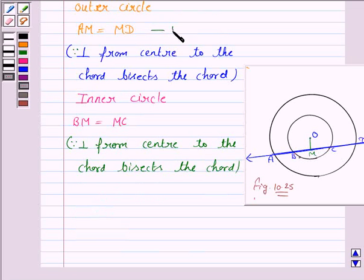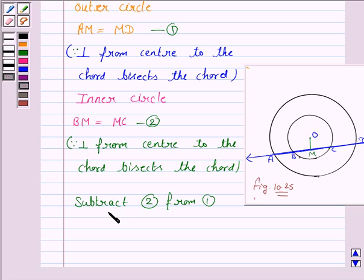Let us call this as 1 and this as 2. Now subtract 2 from 1. So we have AM minus BM is equal to MD minus MC.